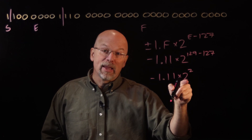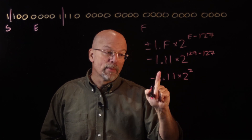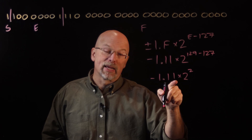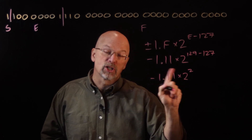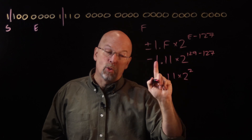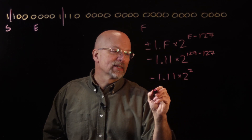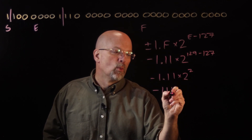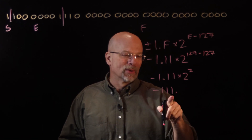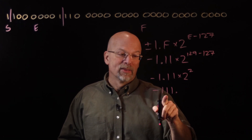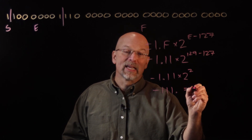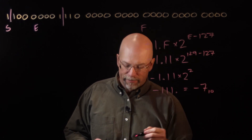By multiplying by 2 to the 2, remember what that does: every time we multiply by 2, we take the binary point and move it one position to the right. Since we multiply by 2 twice, that moves it to the right twice, and we get negative 111 point. That is 1 plus 2 plus 4, so this equals negative 7 in decimal.